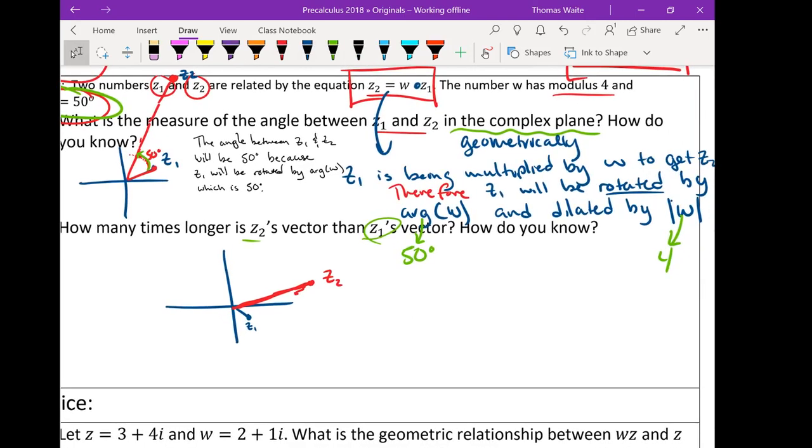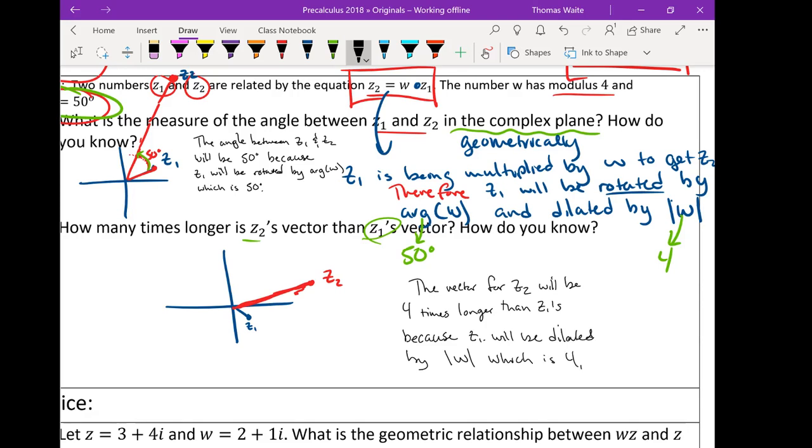So in short, Z2's vector, the vector for Z2 will be 4 times longer than Z1's because Z1 will be dilated by the modulus of W, which is 4. So we're able to do a lot of this work just by knowing what the geometric effect of multiplication is. When we multiply by a number, we get a rotation by the argument and a dilation by the modulus.